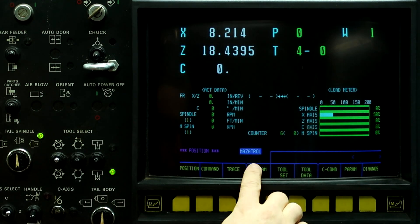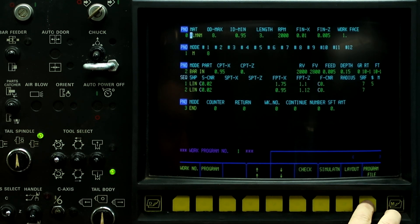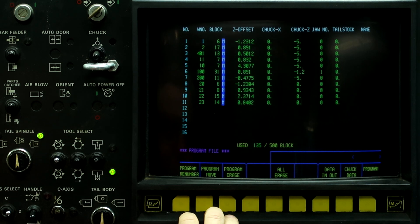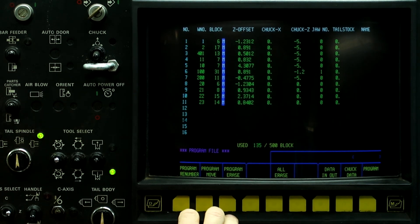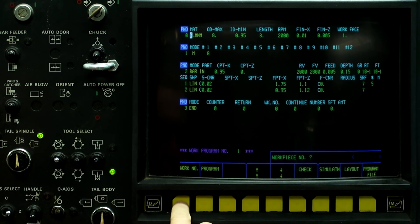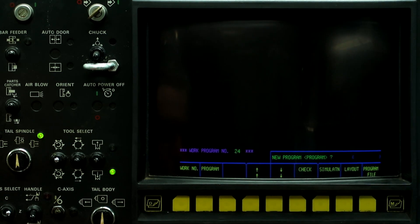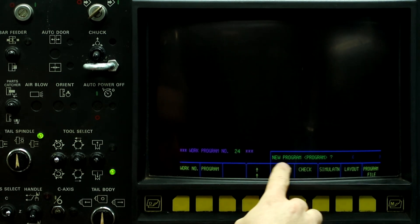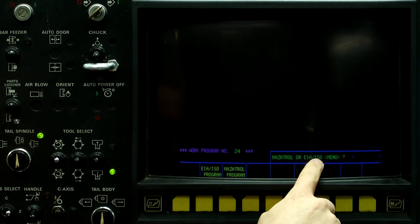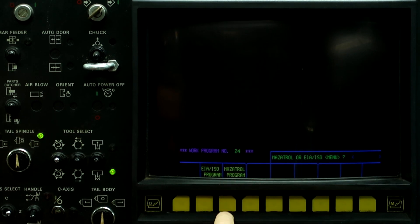Let's go to the left button, program, program file, and we're going to select a work number that is not listed here. We're going to select work number 24. Go back to program, work number 24, enter. It couldn't find it. If it's a new program, push the program button. Mazatrol or EIA? We're going with Mazatrol.